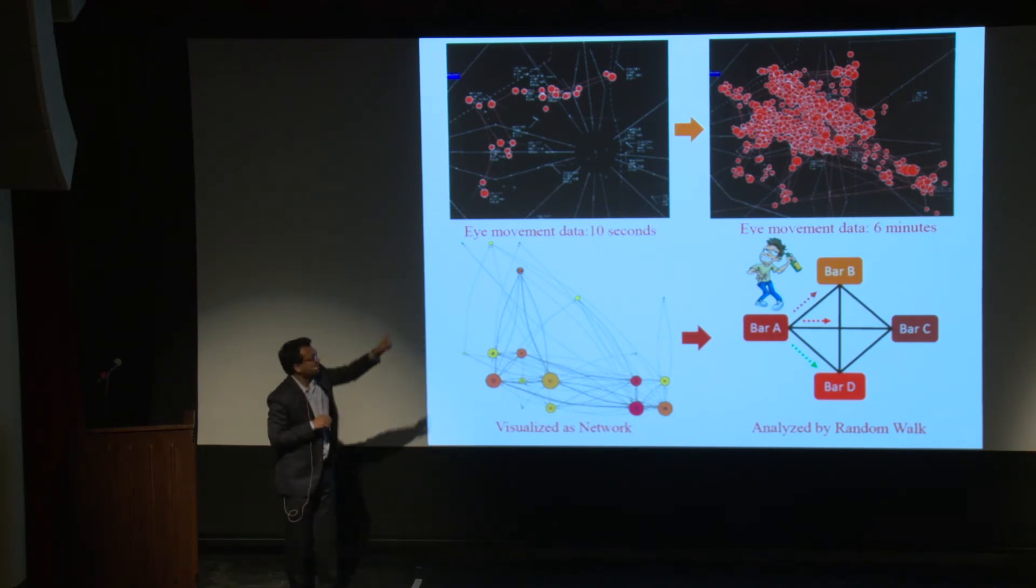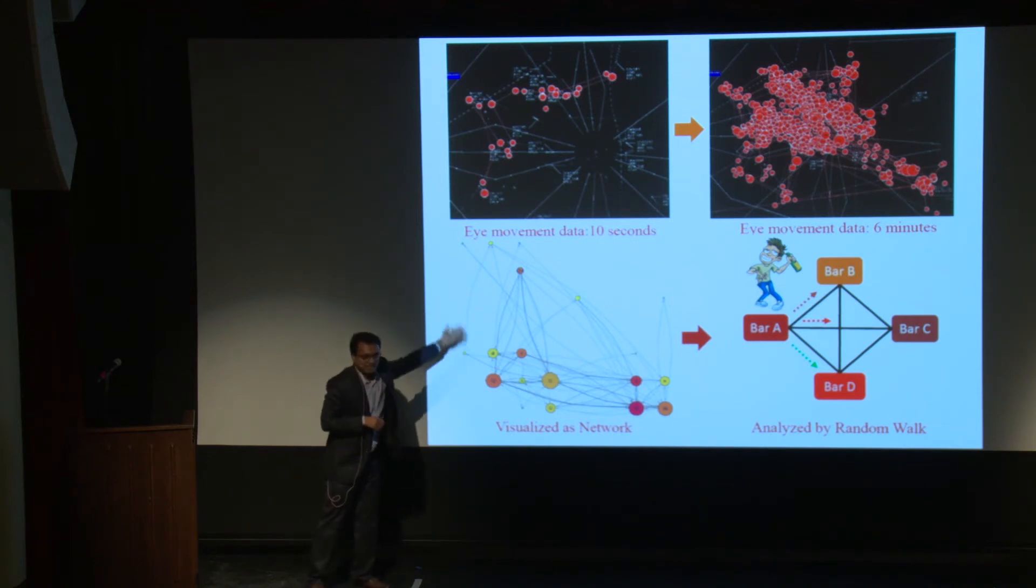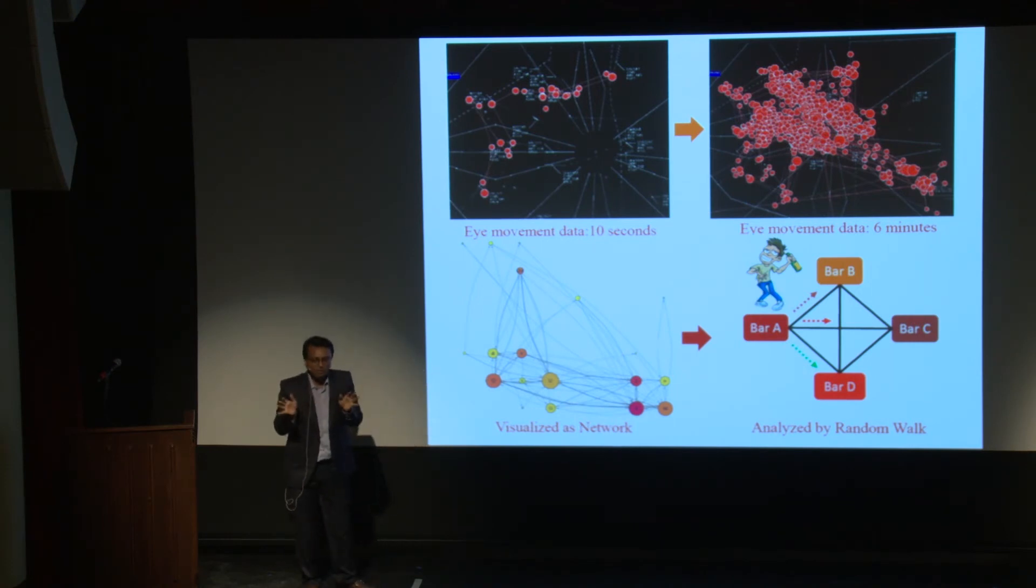But don't worry, I have been successful in analyzing that data to a nice graph, where you have colorful circles and edges connecting them. These circles are aircraft, and the color represents how important. So using this, we can know how their performance is, and we can measure how good they are doing.